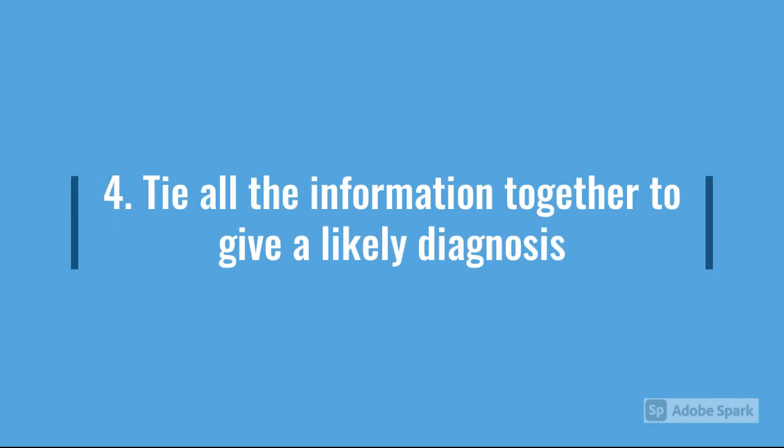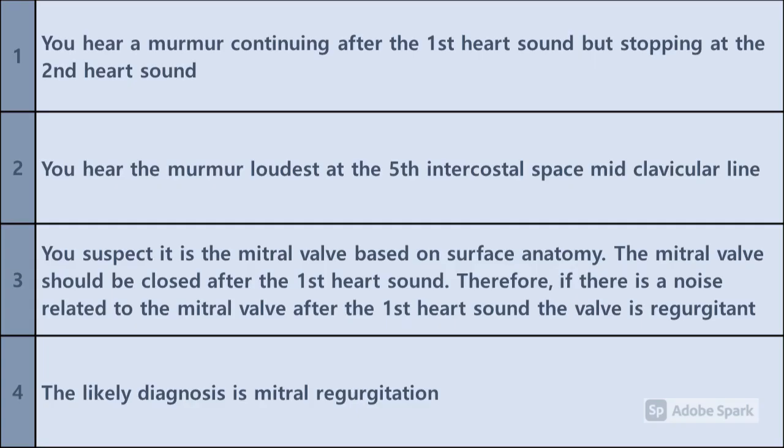For example: you hear a murmur that continues after the first heart sound but stops at the second heart sound. You hear it loudest at the fifth intercostal space in the mid-clavicular line — so you think that's mitral valve pathology based on surface anatomy. You know the mitral valve should be closed after the first heart sound, i.e. during systole. So the noise is related to the mitral valve when it should be closed — therefore that valve must be regurgitant. The most likely diagnosis is mitral regurgitation.